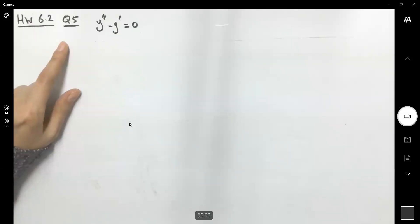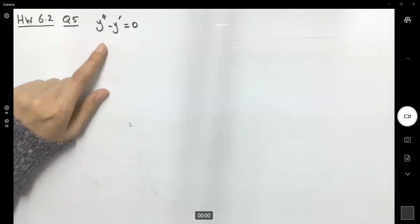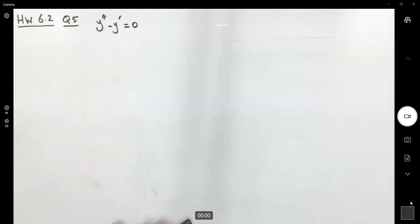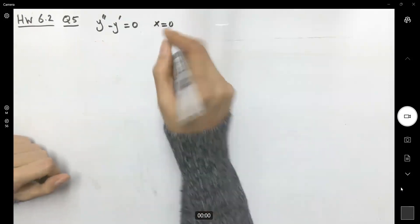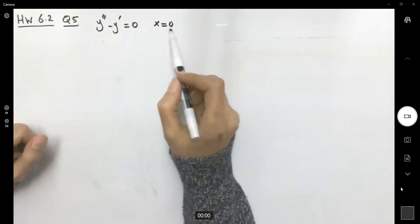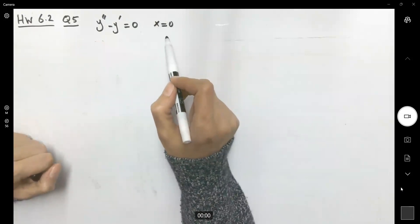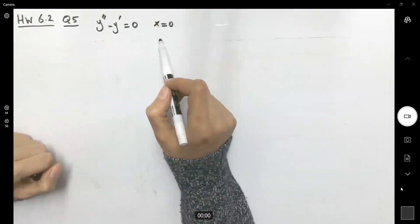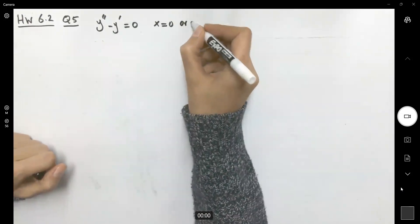Let's take a look at question 5. It says solve the following differential equation: the second derivative of y minus y prime is equal to zero. Find the solution around this point. First, check to see if it's an ordinary point or a singular point. x equals zero is going to be an ordinary point.